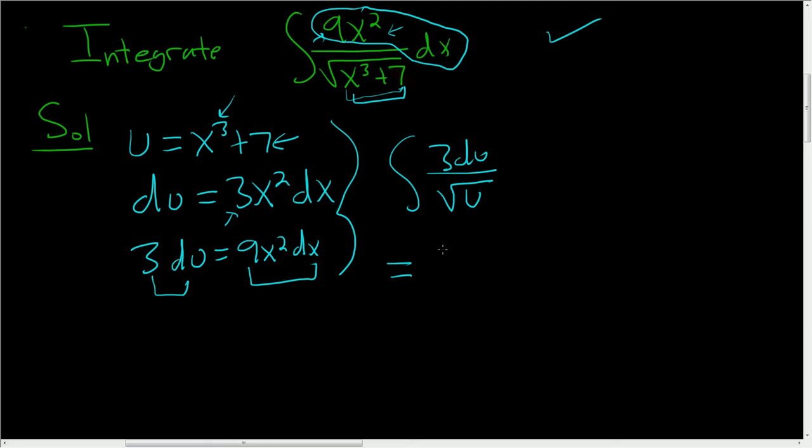To integrate this, we have to write this as u to a power. So the square root of u is u to the 1 half, and when we bring it upstairs, it becomes u to the negative 1 half du.